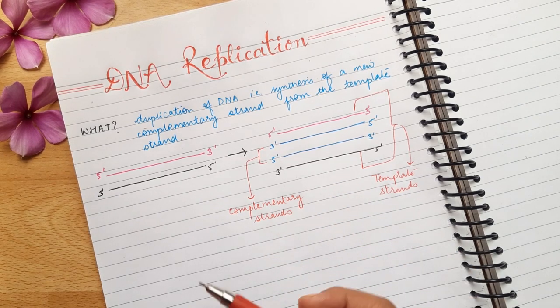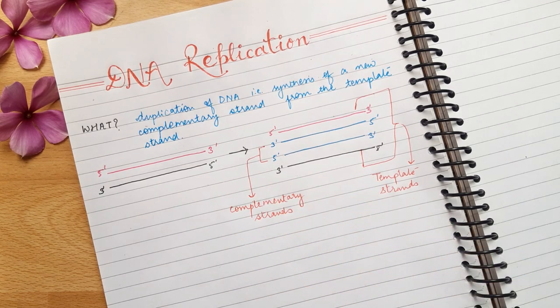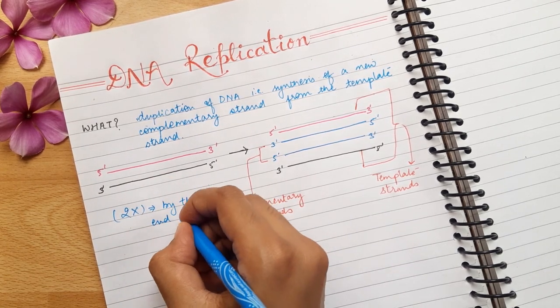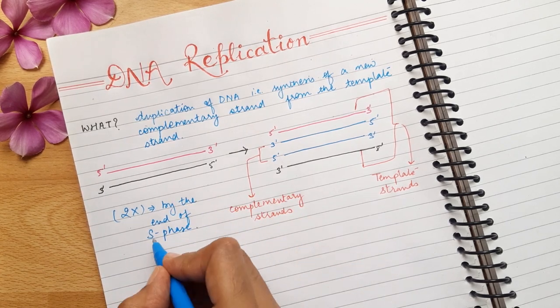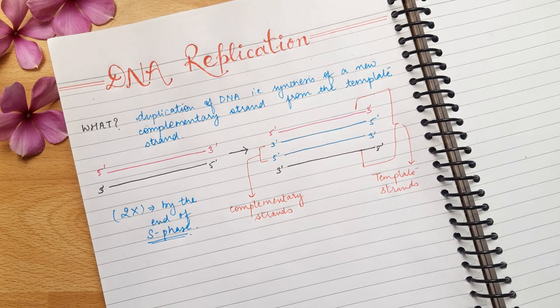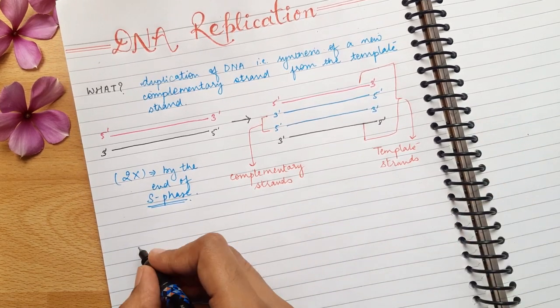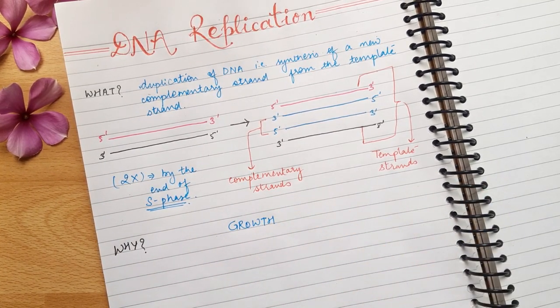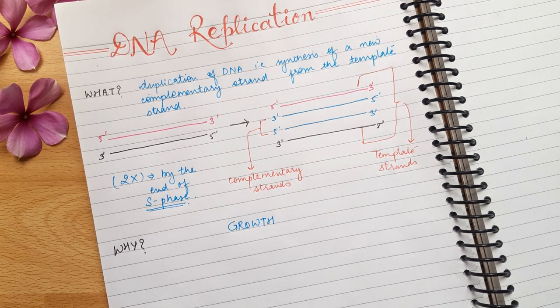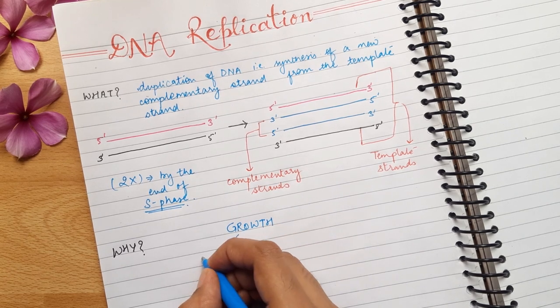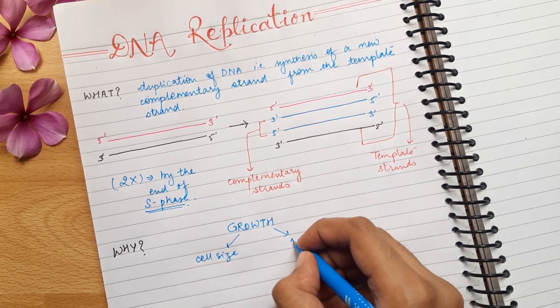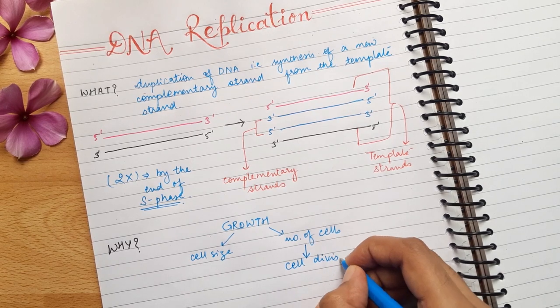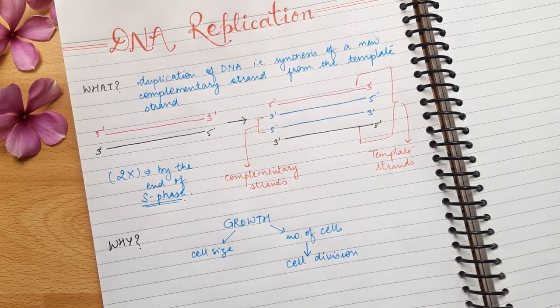Now, from this diagram, you can see, we started with two strands and we ended up with four strands which means the amount of DNA doubles at the end of replication and this replication takes place in the S phase of cell cycle, which we'll talk about in a minute. Now, the question comes as to why this process takes place. What is the significance of it? Now, you see, one of the main characteristics of living things which differentiate them from non-living is growth. Now, growth can be of two types. It can be increase in cell size or an increase in number of cells.